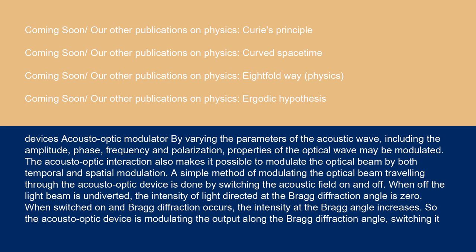The acousto-optic interaction also makes it possible to modulate the optical beam by both temporal and spatial modulation. A simple method of modulating the optical beam traveling through the acousto-optic device is done by switching the acoustic field on and off. When off, the light beam is undiverted; the intensity of light directed at the Bragg diffraction angle is zero. When switched on and Bragg diffraction occurs, the intensity at the Bragg angle increases. So the acousto-optic device is modulating the output along the Bragg diffraction angle, switching it on and off.